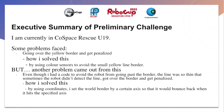But another problem came from there: even though there was code to avoid the yellow line, the line was so thin that sometimes the robot didn't detect it and went over the border. I solved this by using coordinates — I set the border by a certain axis so that the robot would bounce back when it hit the specified axis.